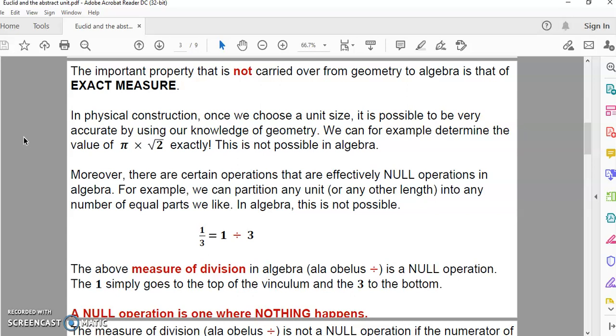A null operation in algebra is one where nothing actually happens. For example, in geometry we can partition any line segment into any number of equal parts. In algebra this is not possible.